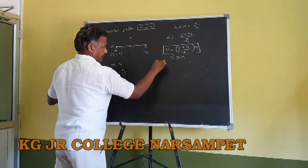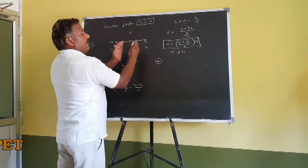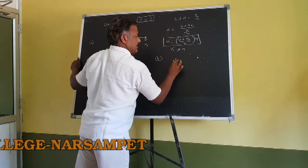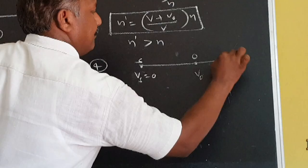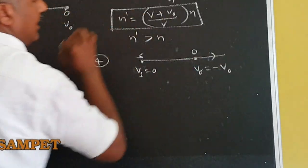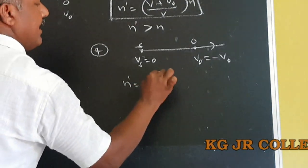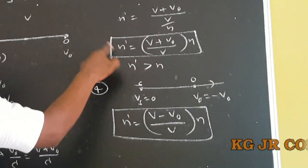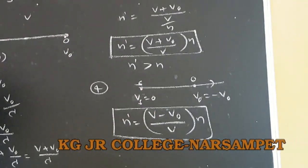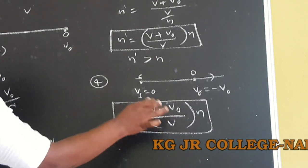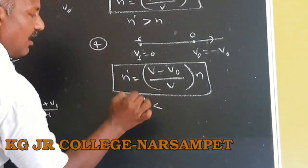Another important case: observer moving away from the stationary source. Since Vs equals zero and the observer is moving in the opposite direction, V naught becomes minus V naught. Substituting in the above equation: N dash equals (V minus V naught)/V × N. In the first case, the numerator is positive so apparent frequency increases. In this case, numerator is negative so apparent frequency decreases compared to actual frequency.